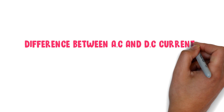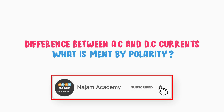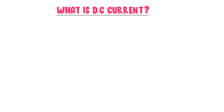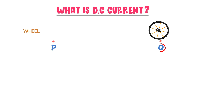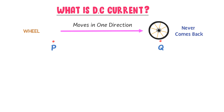What is the difference between AC and DC currents, and what is meant by polarity? Firstly, let me teach you what is DC or direct current. Consider two points, P and Q. Now let a wheel be present at point P. It then moves from point P to point Q and never comes back from point Q to point P. So we say that this wheel moves in one direction.